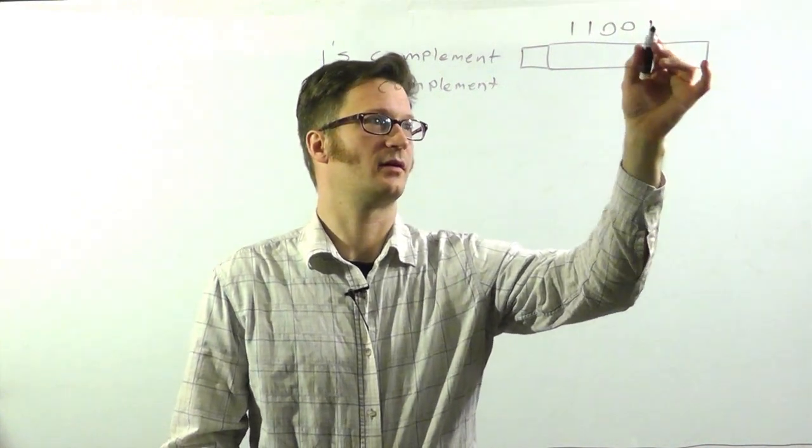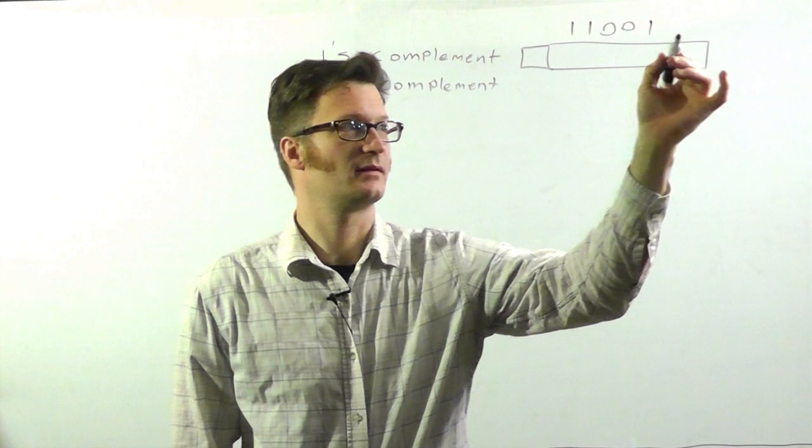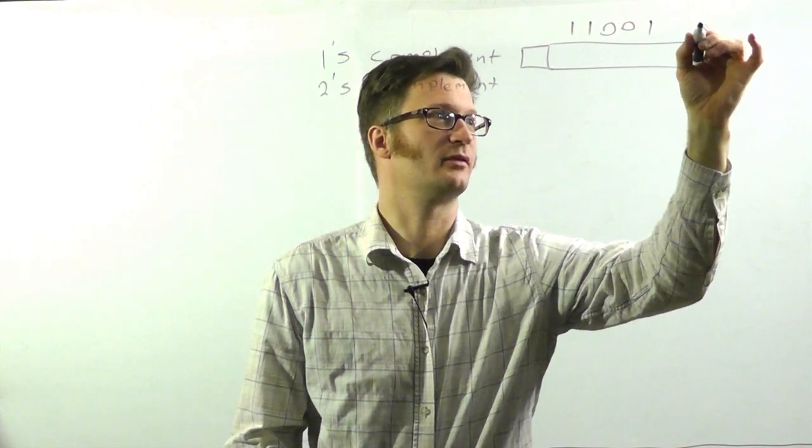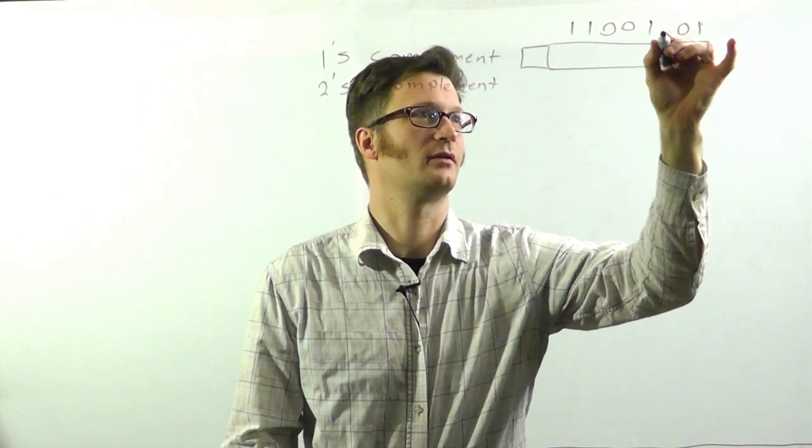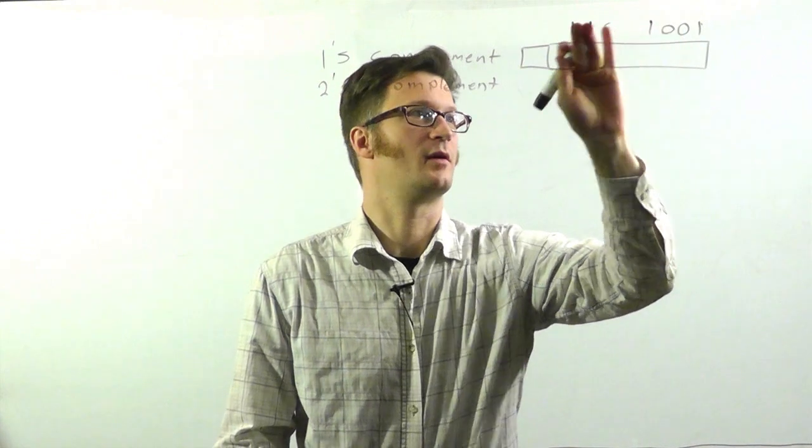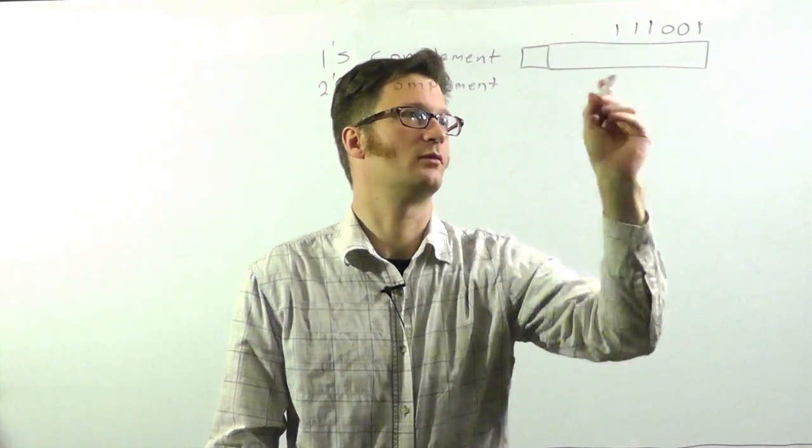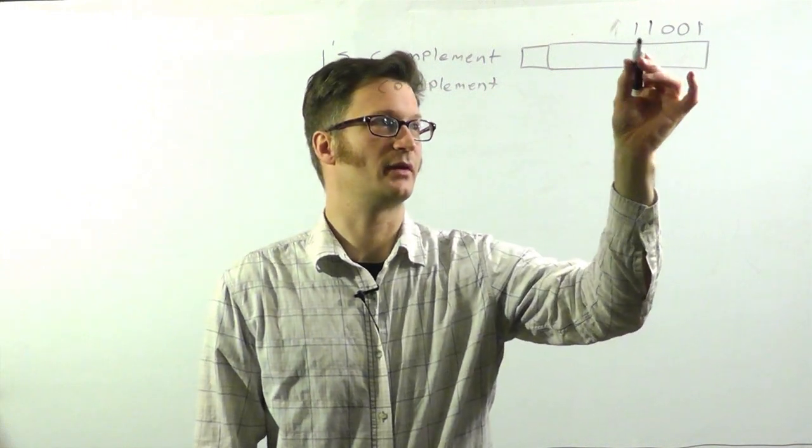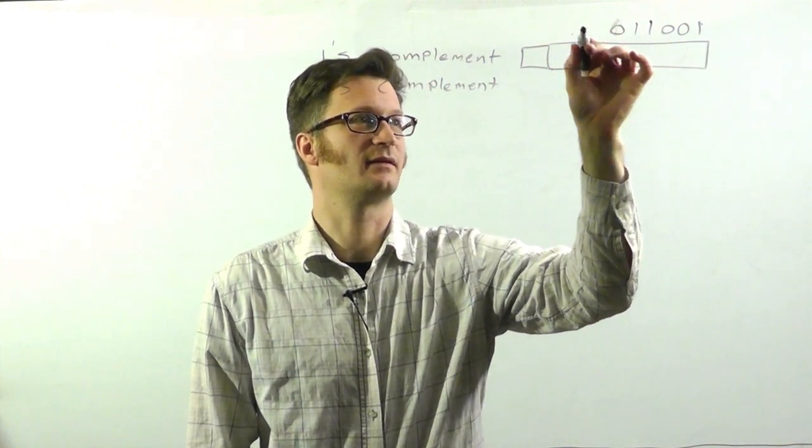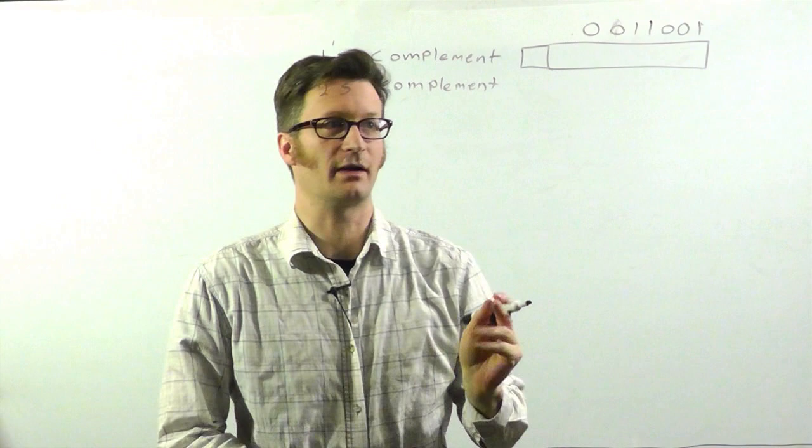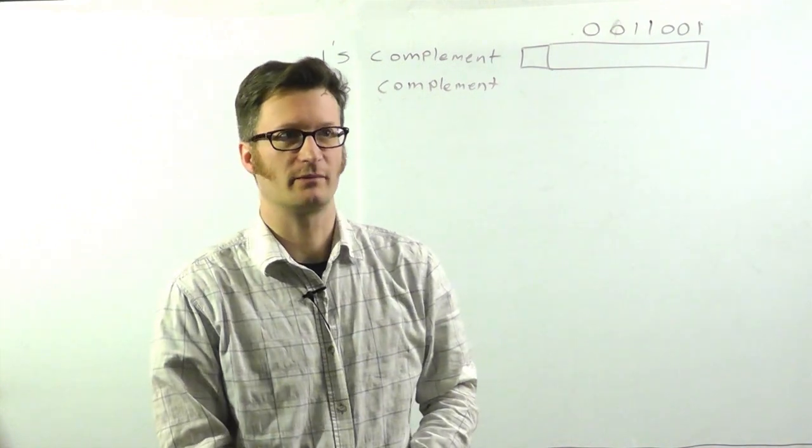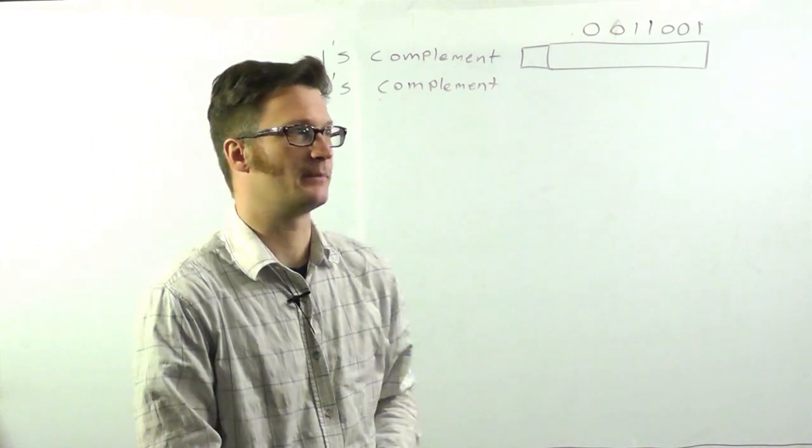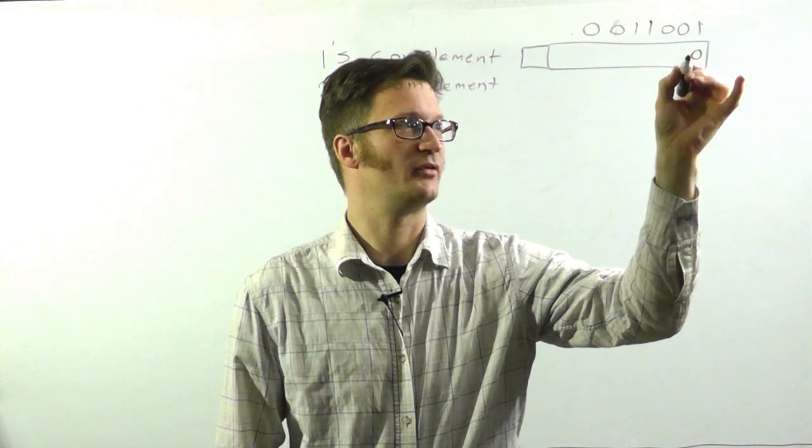So, to complement this, actually, let me scoot this one over. So, we're going to have 1, 0, 0, 1, 1, 1. And then to fill it out, the other 7 bits, we have 5, 6, 7 bits. To complement this number, using one's complement, we just simply swap 0 for 1.